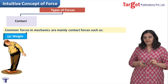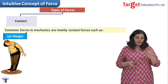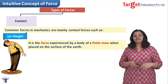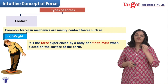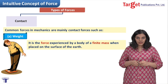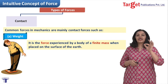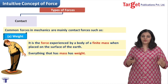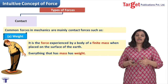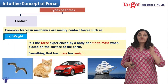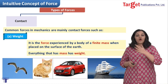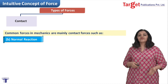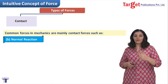The first contact force we know is weight. By definition, weight is the force experienced by a body of finite mass when placed on the surface of the earth — it is nothing but the gravitational force acting on a body. Everything that has mass has weight; something that has more mass has more weight. For everything from a bird to a cat to a car to a ship, all objects that have mass also have weight.